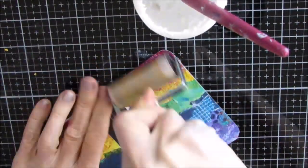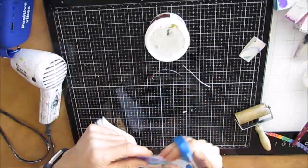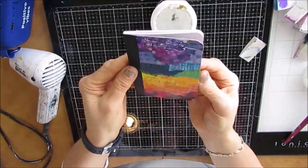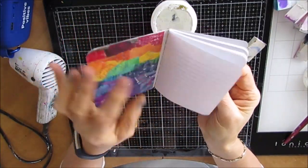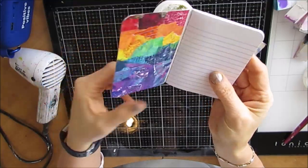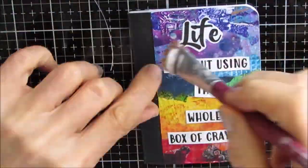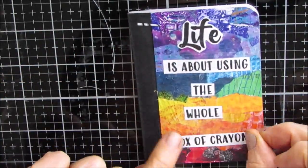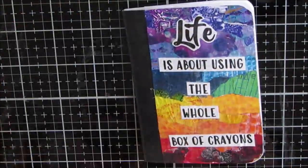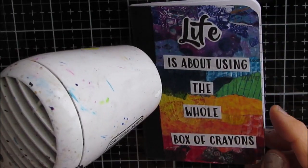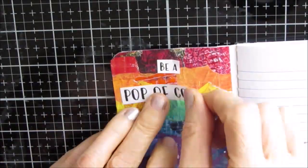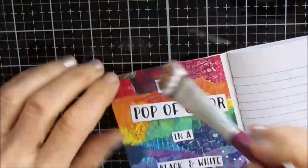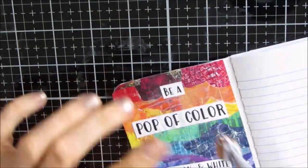So I'm cutting this down, trimming off the edge, checking to make sure that it's all perfectly adhered. Again, trimming off more and I'm loving the look of the collaging that I've done here. But you could use a gel print, you can paint on it if you want. Now I cut out the quote, life is about using the whole box of crayons. And I picked a font that was fairly dark and bold because I wanted that contrast, the black and white with the color background. And I put another one in the middle, be a pop of color in a black and white world.